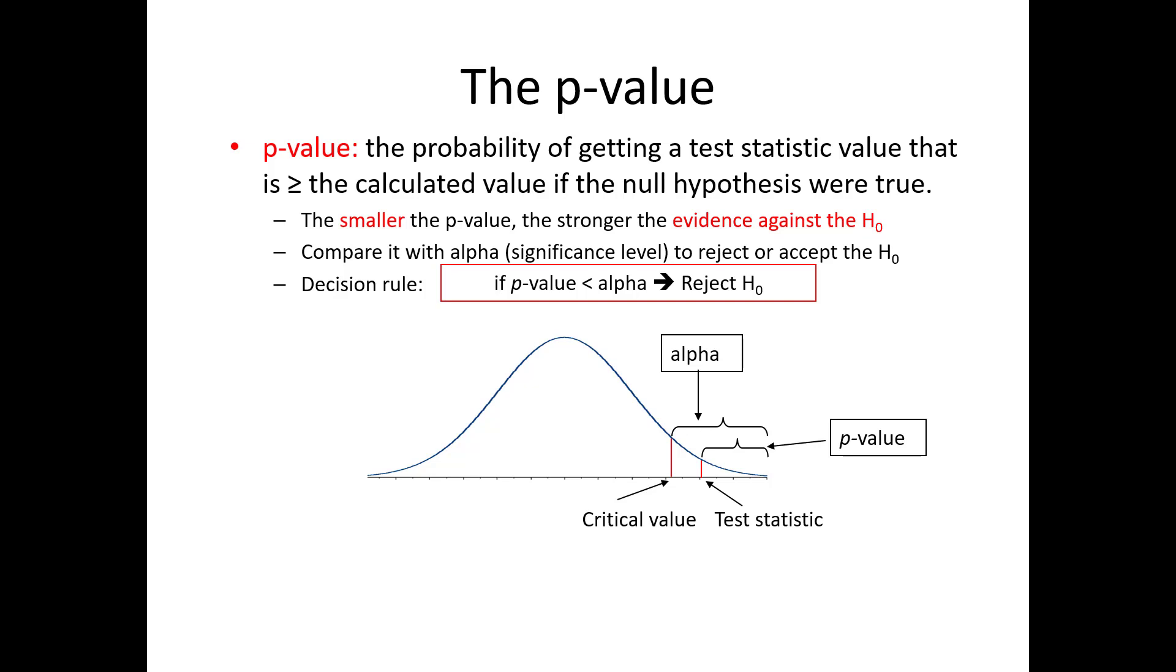In practice, looking at the p-value calculated by Excel and comparing it with alpha is all you need to do. This is much easier than looking up a table to find the critical value.